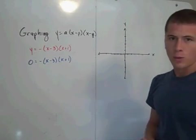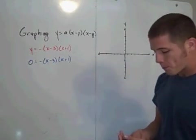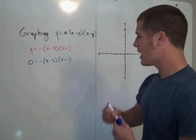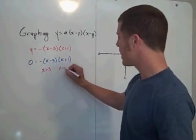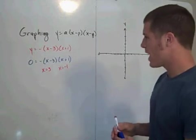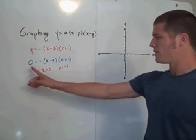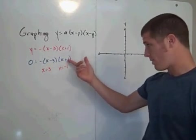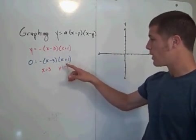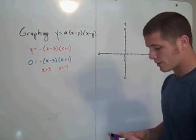And then you can use the zero product property to realize that when x is equal to 3, or when x is equal to negative 1, that's when we have a y value of 0, since 3 minus 3 is 0, and 0 times whatever this would be would be 0. And then negative 1 plus 1 is 0, and 0 times whatever that would be would be 0.